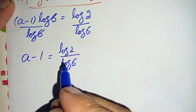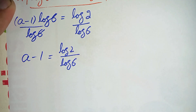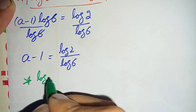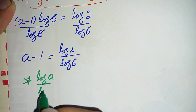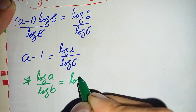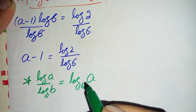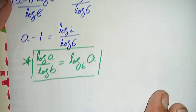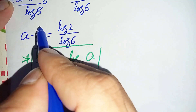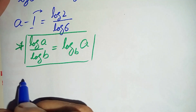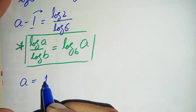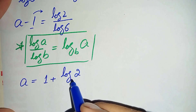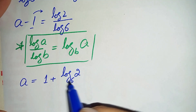On the right hand side we will use a log property to change it to simplified form. The property states that log of a divided by log of b can also be written as log of a with base b. Using this property, the right hand side becomes log of 2 with base 6.